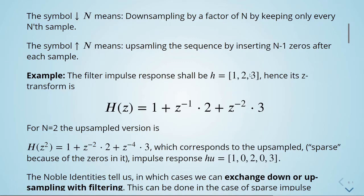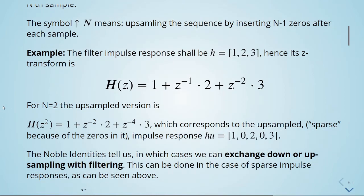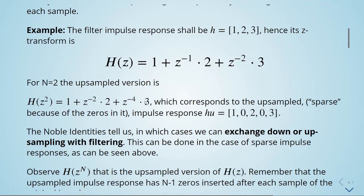As an example, if we have a filter impulse response given by the array [1, 2, 3], the z-transform of this impulse response is: 1·z⁰ + 2·z⁻¹ + 3·z⁻². For n equals two, we have an upsampled version, which is sparse because of the zeros in it. The upsampled impulse response is [1, 0, 2, 0, 3] — inserting n minus one zeros after each sample.